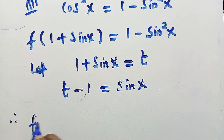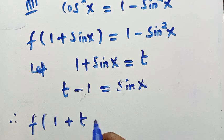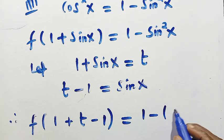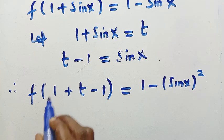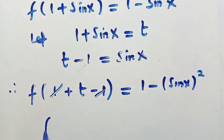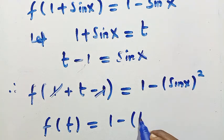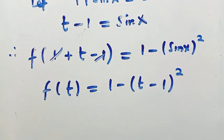By replacement, f of one plus sine x equals one minus sine squared x. We write sine squared x as sine x raised to the power of two, and replace sine x with t minus one. The one plus one cancels, giving us f of t equals one minus t minus one raised to the power of two.